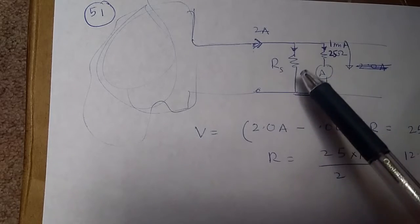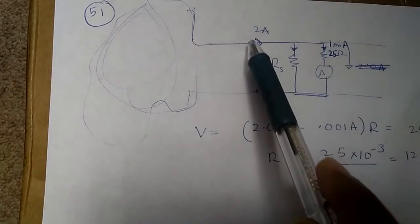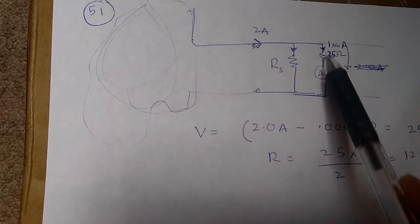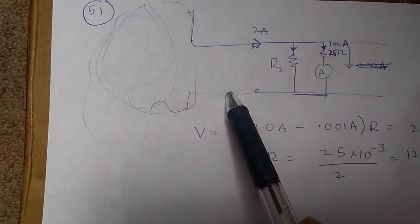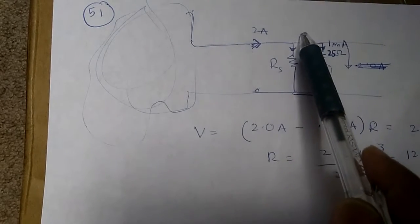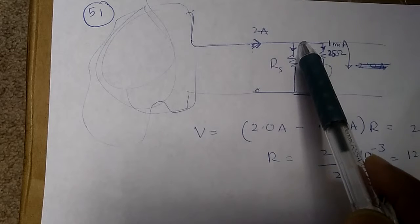So when we use a shunt resistance, this 2 ampere current will get divided. Some part will go to the ammeter and some part will go to the shunt resistor. We want most of the current to go through the shunt, only a very tiny amount will go through the ammeter.